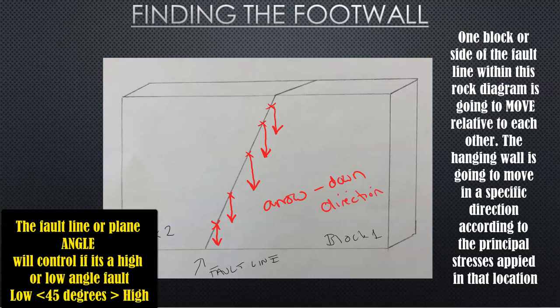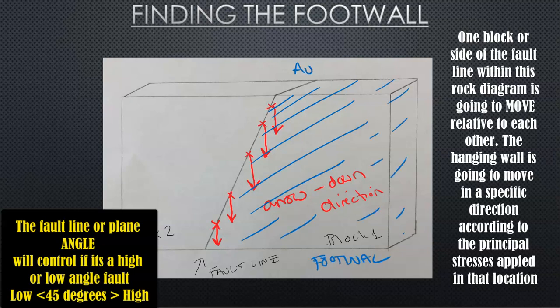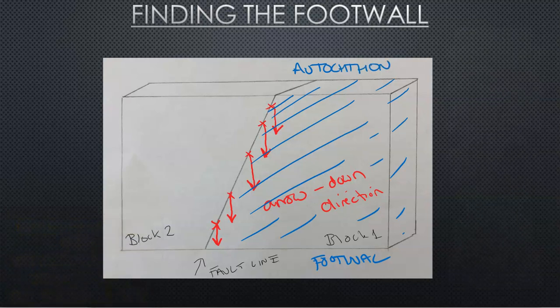Whatever side the arrows fall on, this side over here, this block, this block one, this block one is going to be the footwall or the autochthon. So this one is going to be the one which is in place and the footwall does not move, stays in place. So that means if the footwall is to the right, block one, according to the arrows, then block two is going to be the hanging wall.